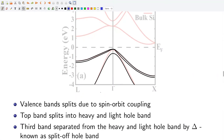The valence band of silicon, germanium, and gallium arsenide splits because of spin-orbit coupling. Spin-orbit coupling is a relativistic effect that splits the electronic bands in many materials. Since I did not discuss spin-orbit coupling in detail, I shall only mention it without going further. Without spin-orbit coupling, there are degenerate valence bands, but due to spin-orbit coupling, the degeneracy is partly lifted as the bands split.